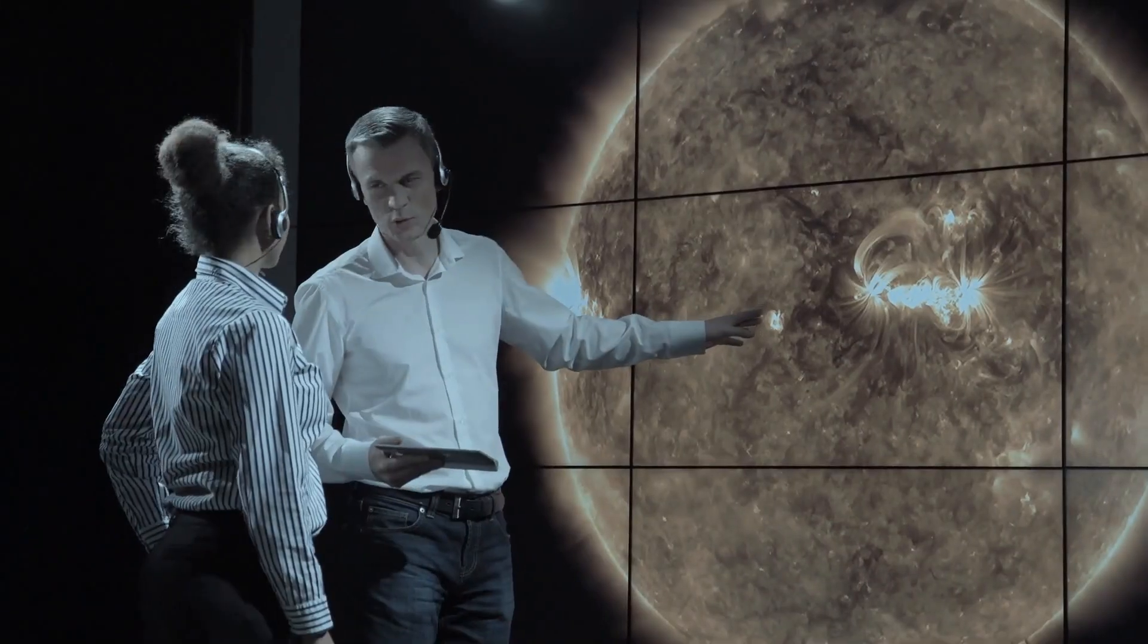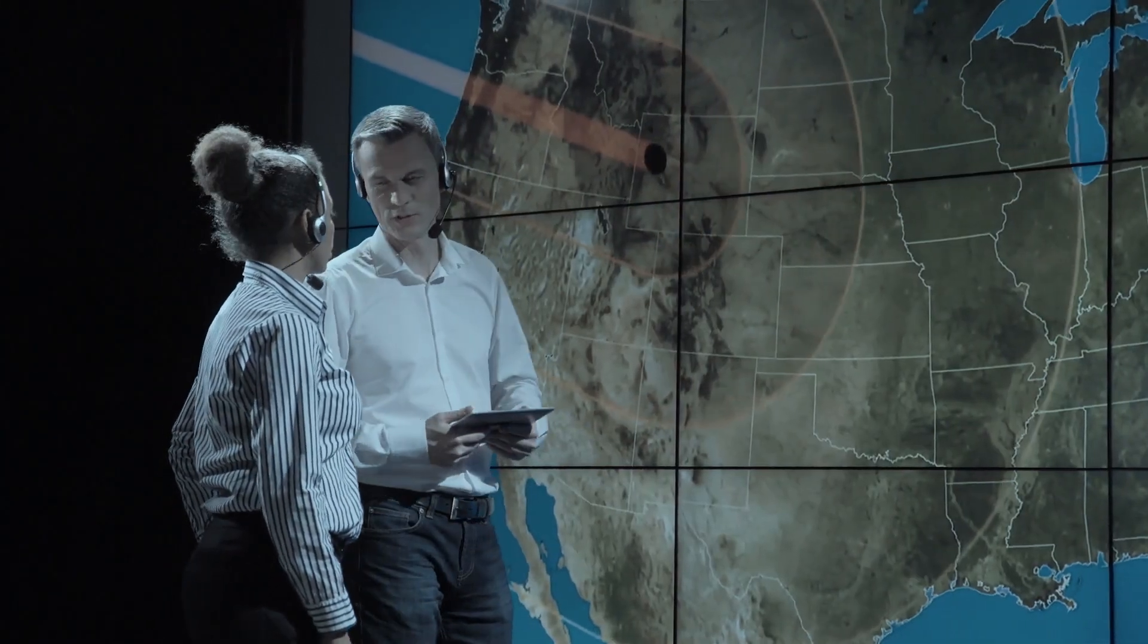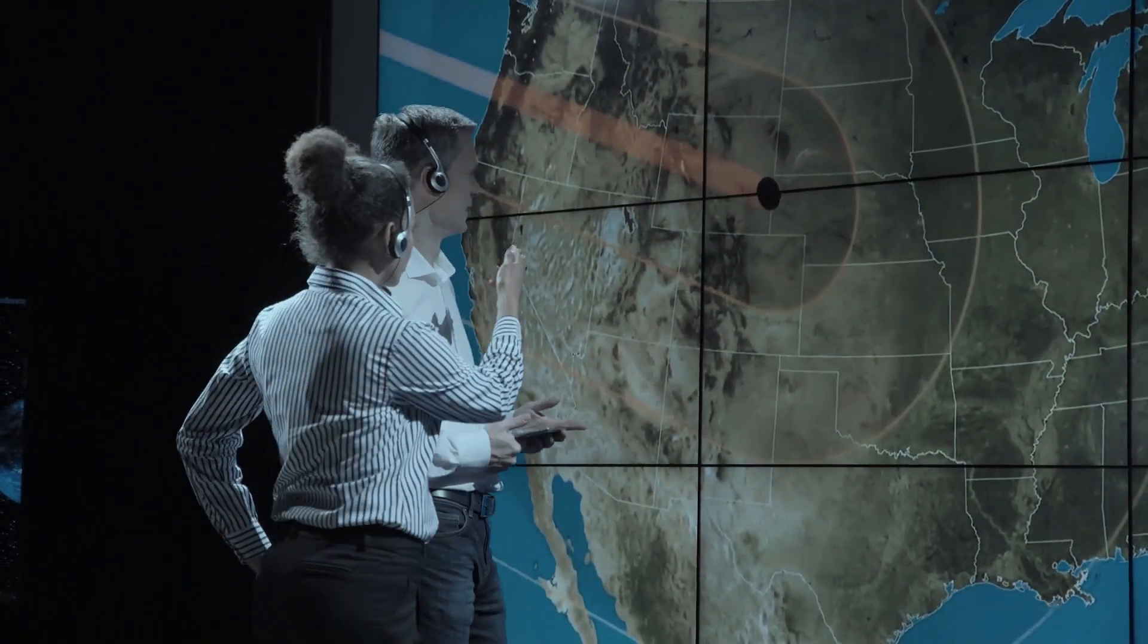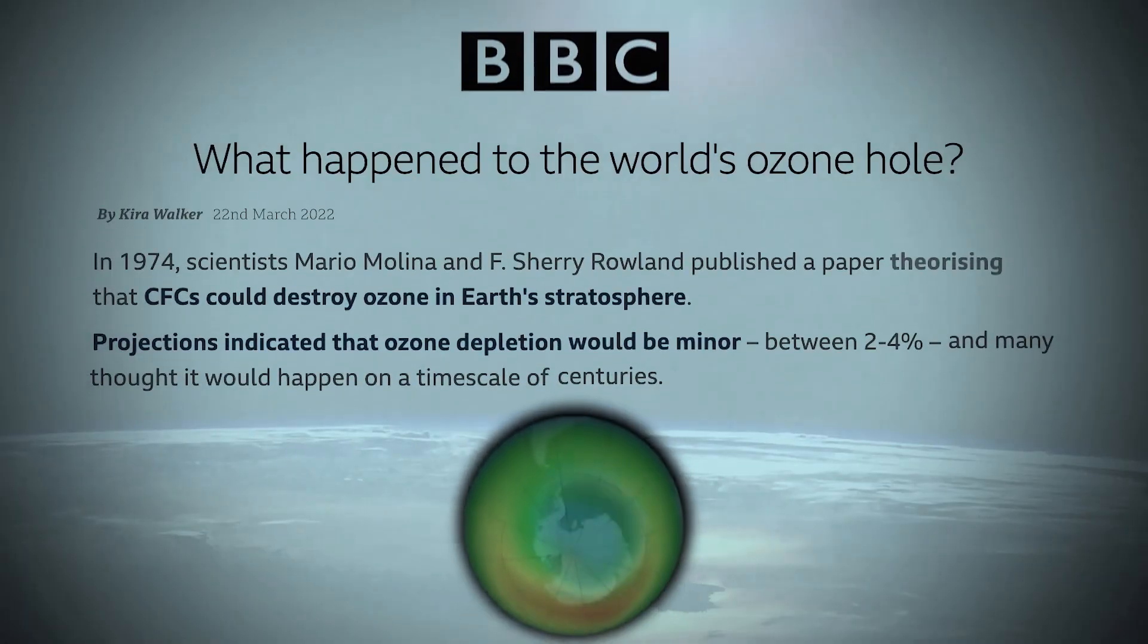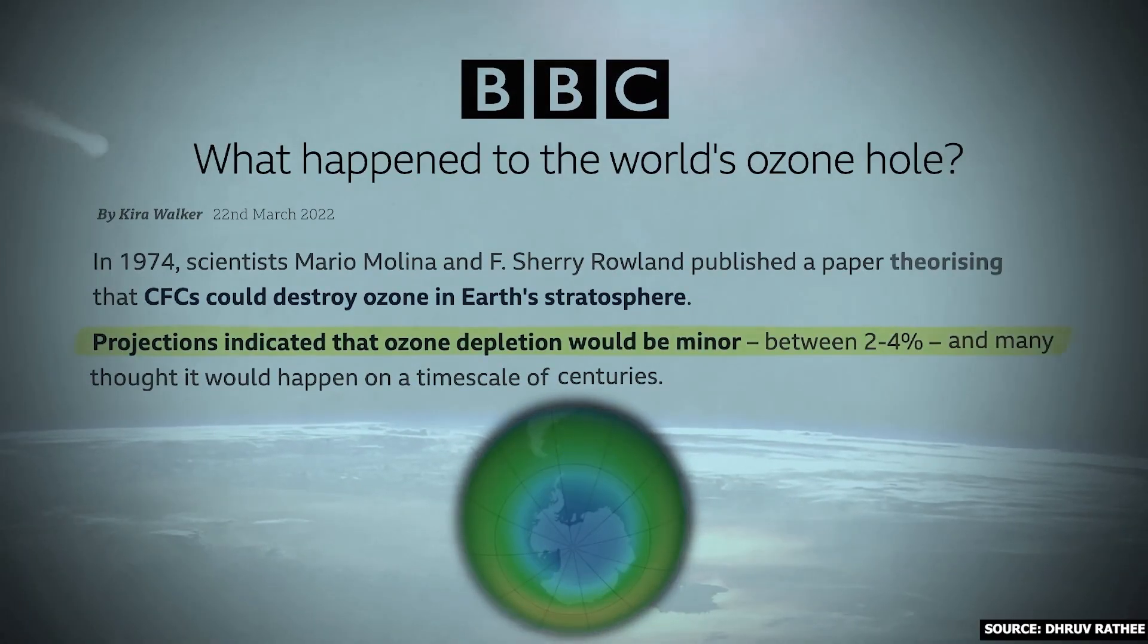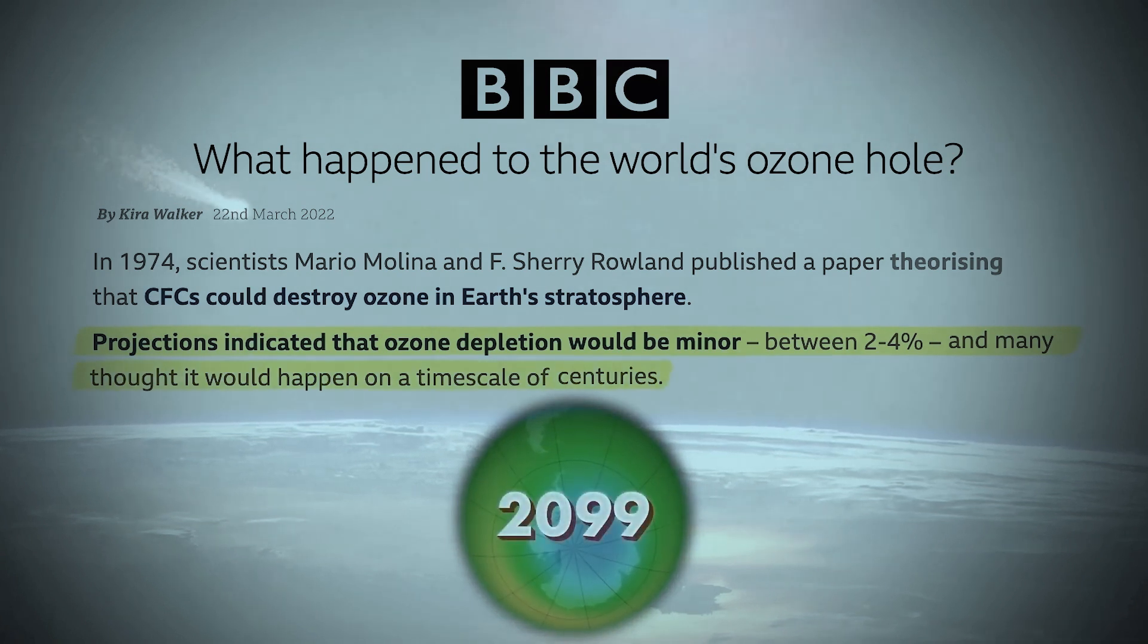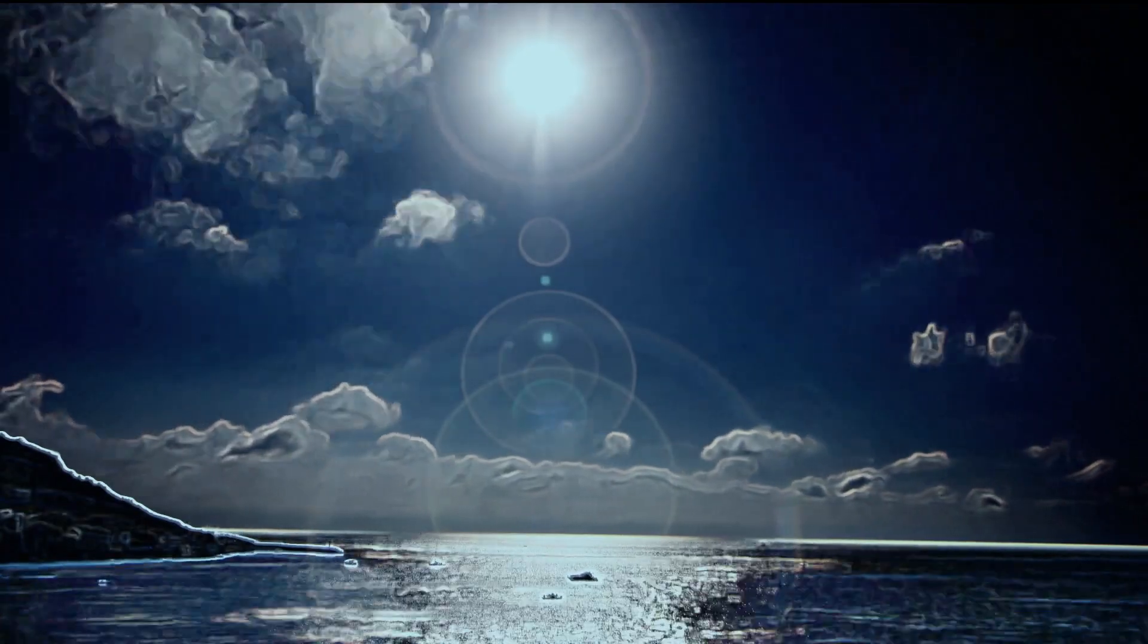After the paper was published, some other scientists tested its claims. They confirmed its accuracy. Each chlorine from the CFCs was seriously harming the ozone. However, early predictions suggested only a 2-4% reduction in the ozone layer by 2099. Since this seemed like a small amount, people weren't too concerned.